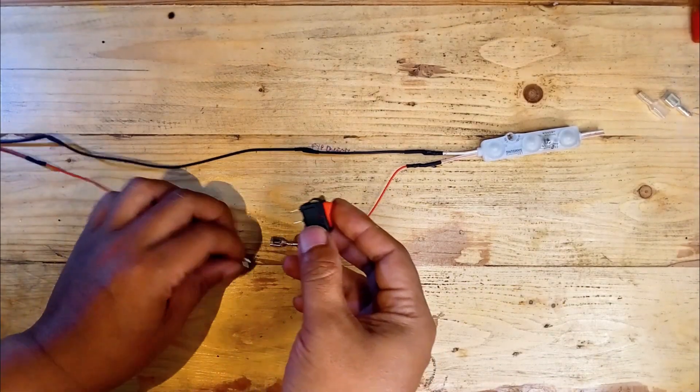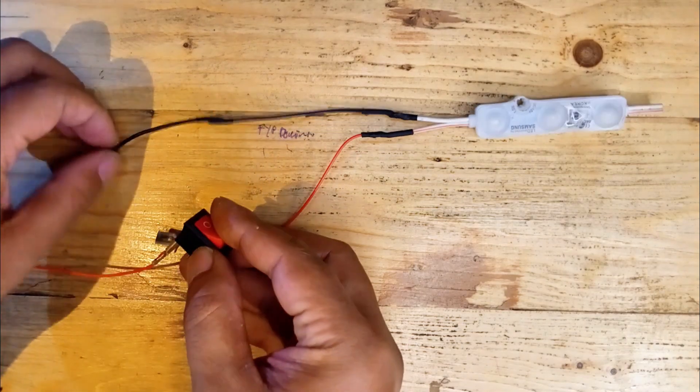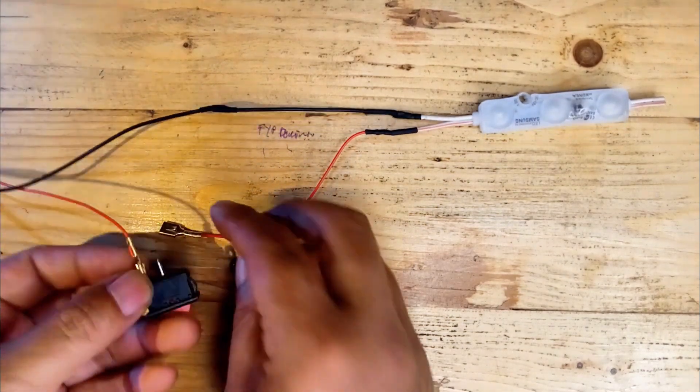First I'll connect the positive terminal of the battery to one terminal of the switch. For this I'm using a red wire to keep things clear.